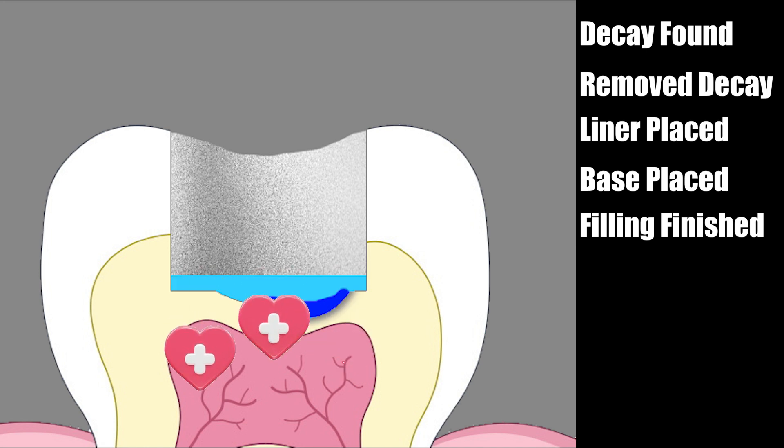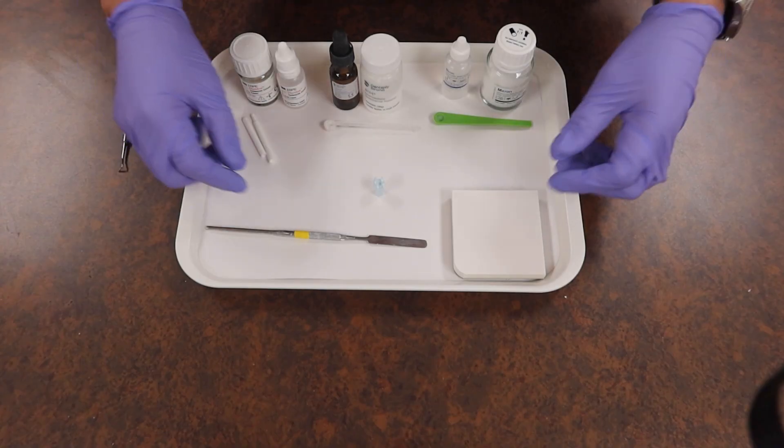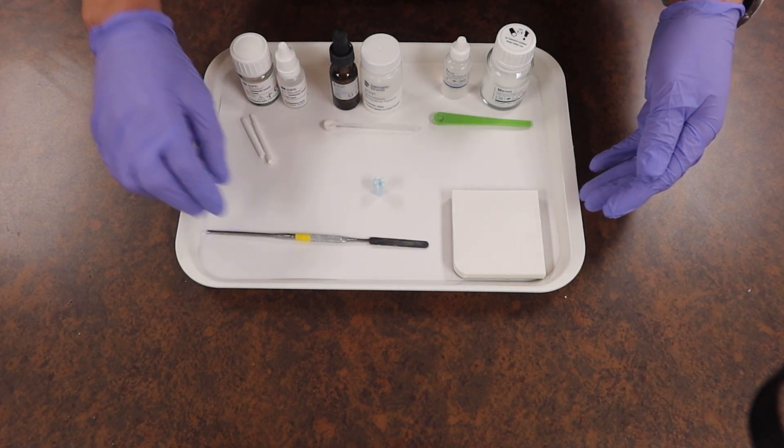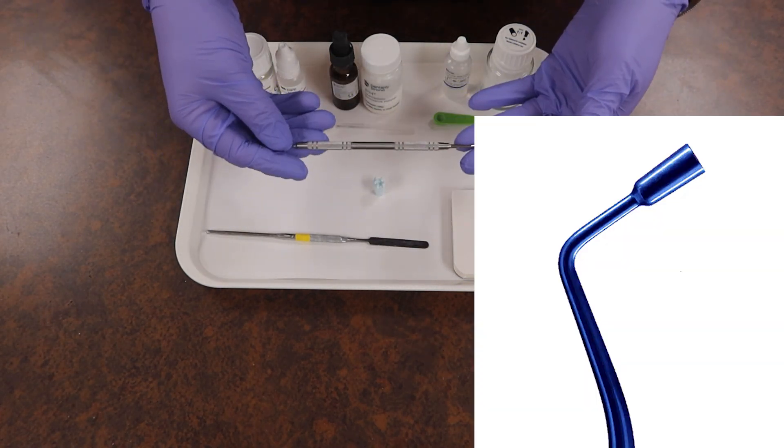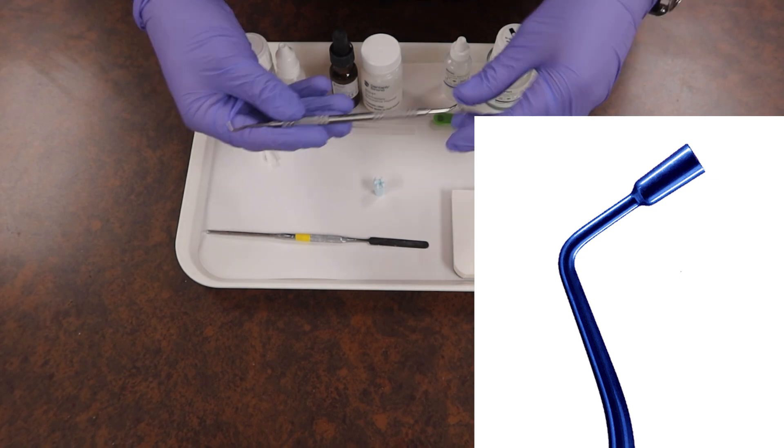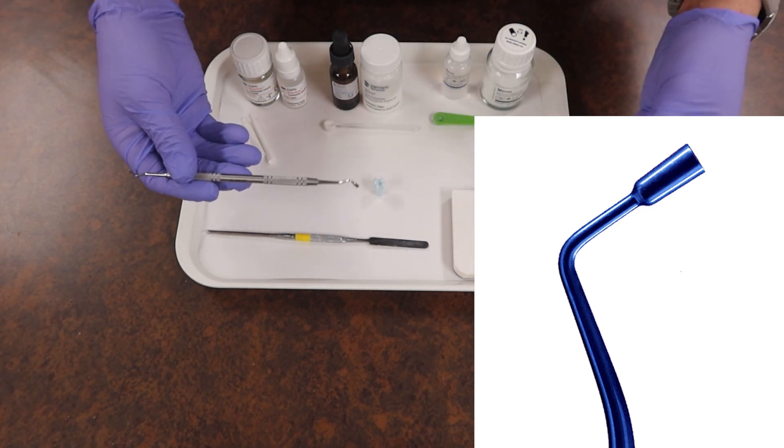With that, we still want to have our mixing pad, mixing spatula, and another special instrument on the side, which is going to be our condenser, because we are going to be using it at the lowest level where the doctor cut the tooth.